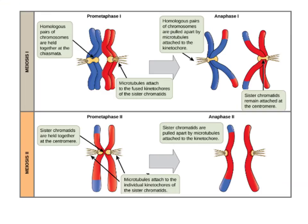Just to sum up the differences between meiosis I and meiosis II: during meiosis I, we're separating the homologous pairs and we still have those replicated chromosomes, so we end up with haploid cells. Then in meiosis II, we break the centromeres and separate out the sister chromatids so that you only have one copy of each homologous pair.